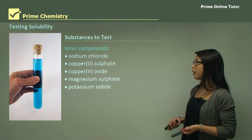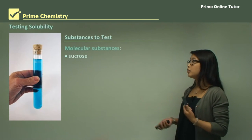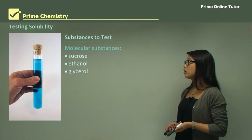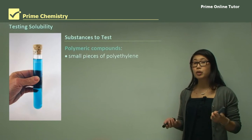Some molecular substances are sucrose, ethanol, glycerol, hexane, and iodine. Then we'll look at polymeric compounds.